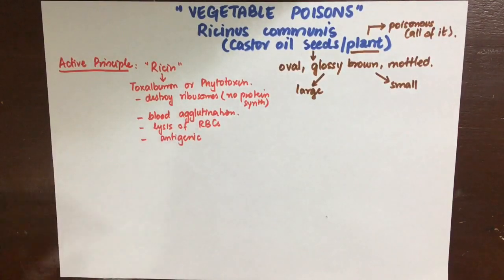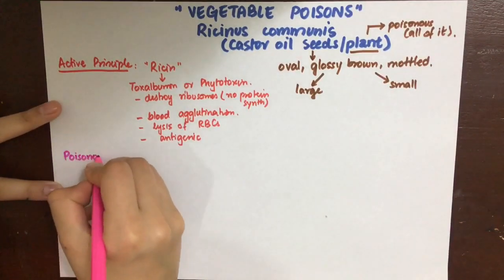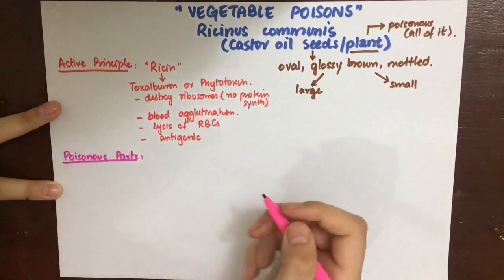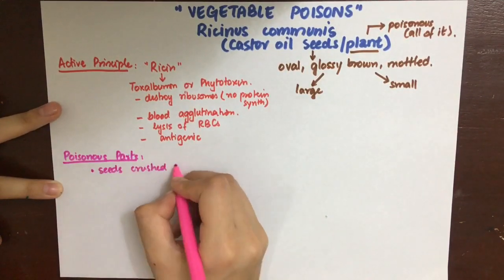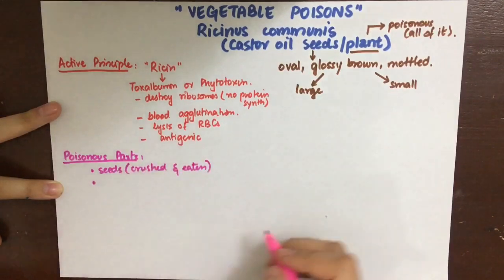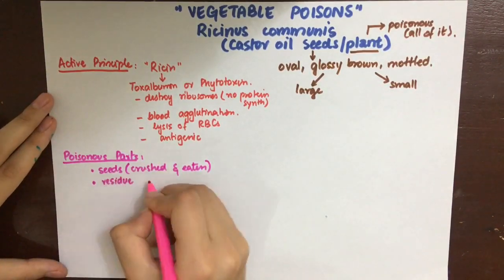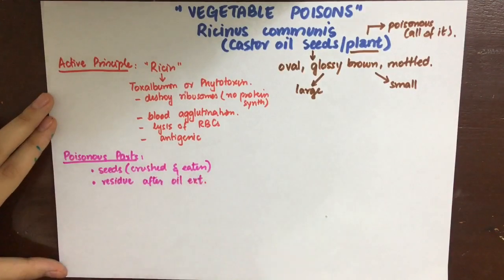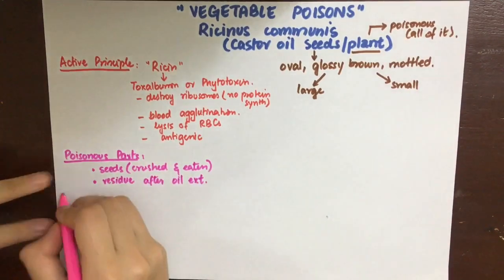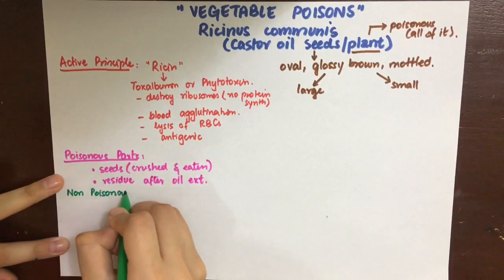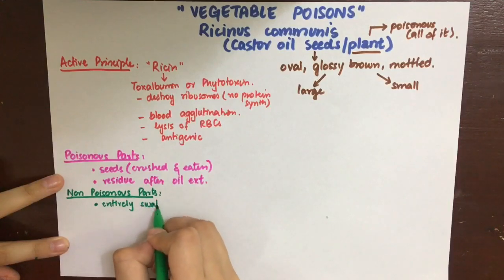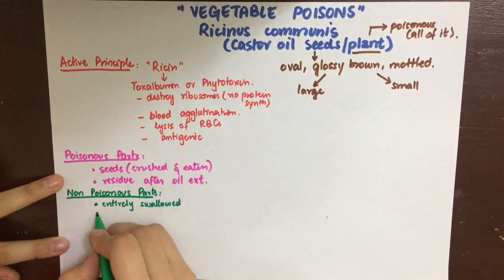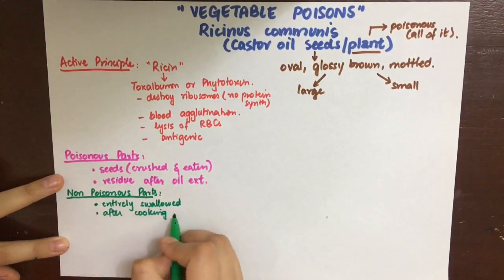Let's see when Ricinus communis will be poisonous and when it will not be. If the seeds are crushed and eaten, it will be poisonous. The residue left after oil is extracted is also poisonous. However, when the seed is swallowed whole, it is not poisonous because it cannot be digested. When it is cooked, it is also not poisonous, and the oil is not poisonous — we use it as a laxative.